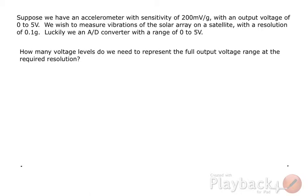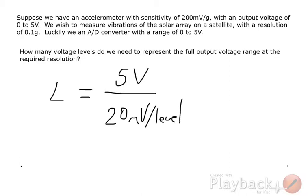How many voltage levels do we need to represent the full output voltage range at the required resolution? The number of levels is the voltage range, 5 volts minus 0 volts, divided by our voltage resolution, 20 millivolts per level. Volts cancel, and we have 250 levels.